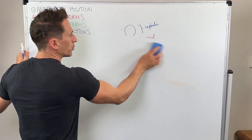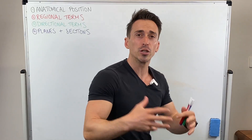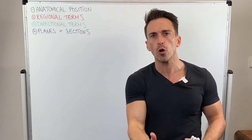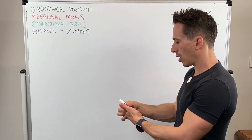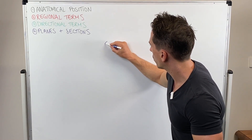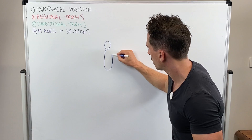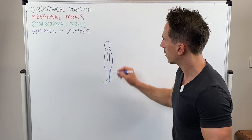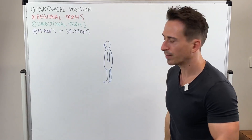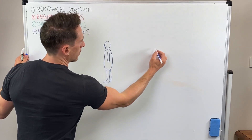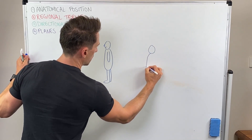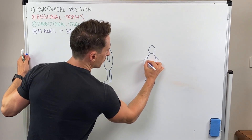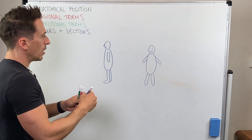Let's now look at directional terms. This is how you can describe various limbs or anatomy in regards to their direction — where something is located in reference to something else. So I want to draw up a body facing forward, in the anatomical position.